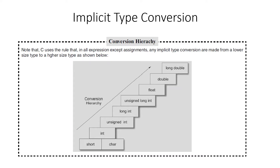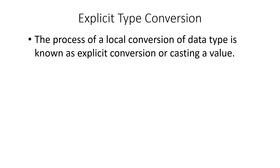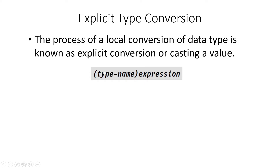This is implicit type conversion. In explicit type conversion, it is a local conversion method, also called casting a value. The syntax requires it to be done explicitly — the type has to be specified within brackets before the expression. In implicit conversion, it was automatically done by the C language, but in explicit type conversion, the data type must be mentioned enclosed in brackets before the expression.